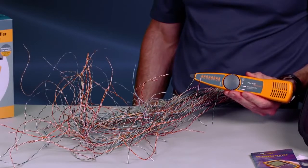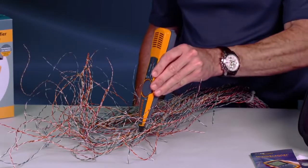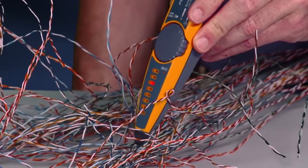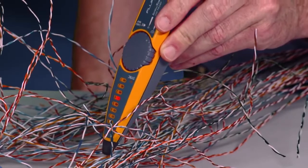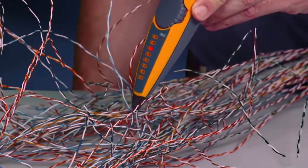We've connected the toner to a random pair in our rat's nest of cabling. It's no problem for the IntelliTone Pro from Fluke Networks. The IntelliTone Pro finds the right wires every time.